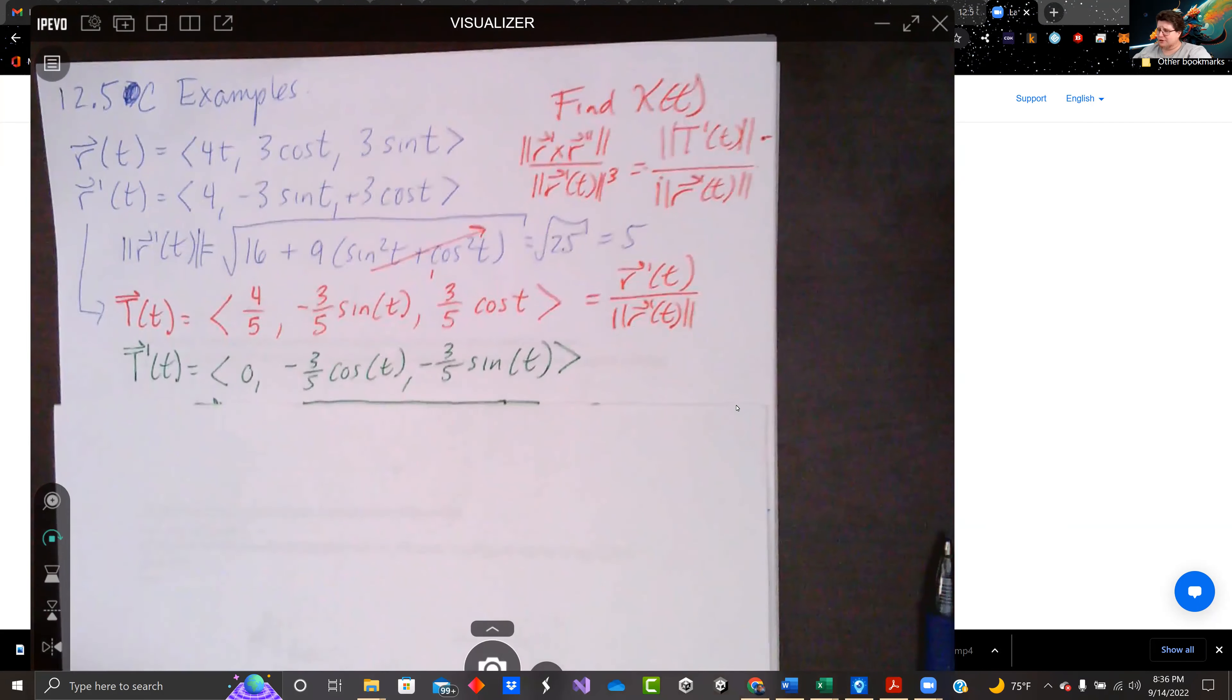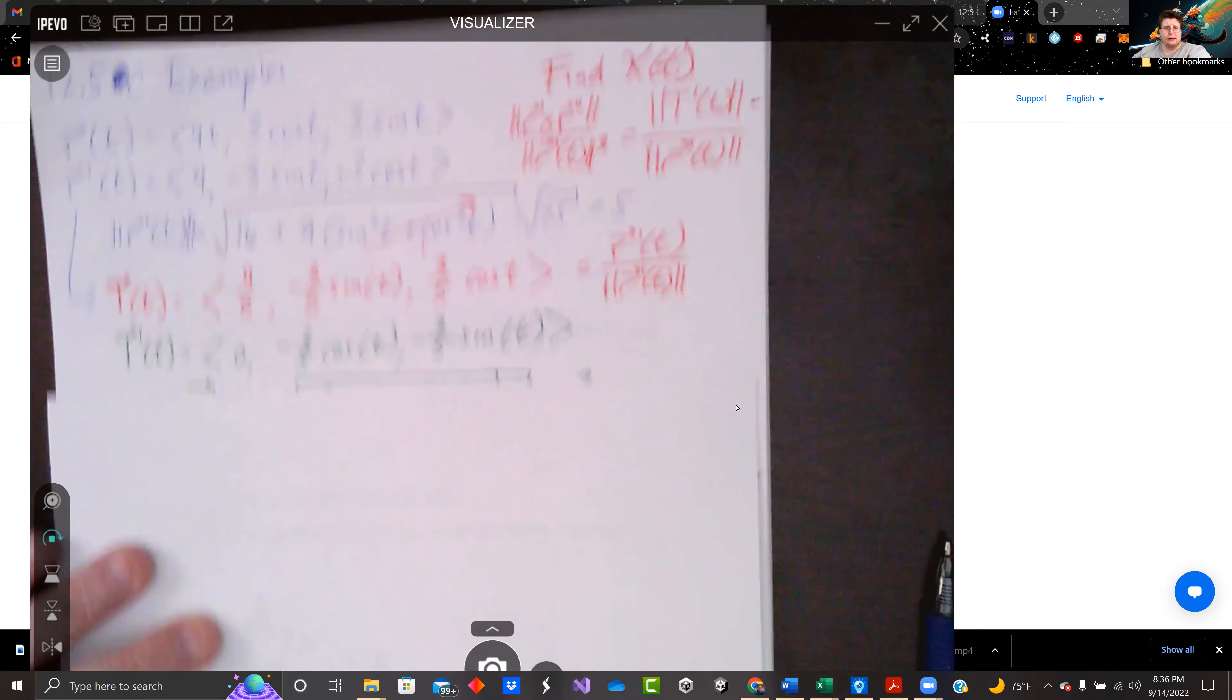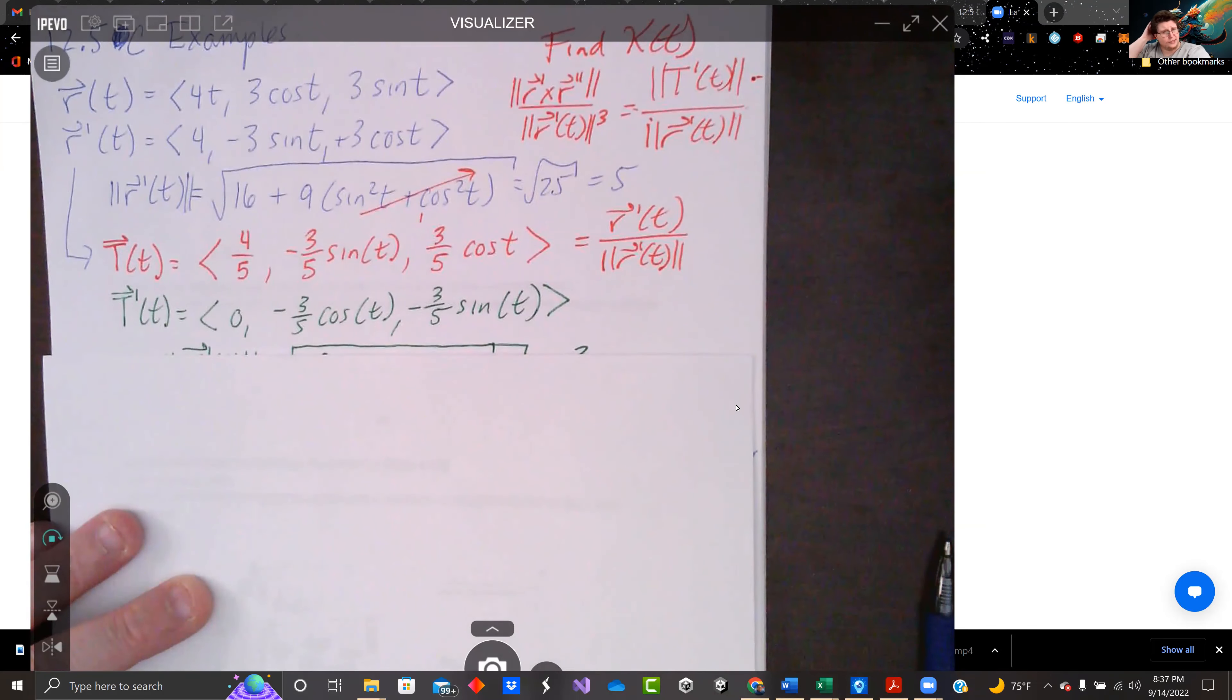So we've got two more steps. We'll take the derivative first. 4 fifths goes to 0. Negative 3 fifths sine goes to negative 3 fifths cosine. And then 3 fifths cosine goes to negative 3 fifths sine.